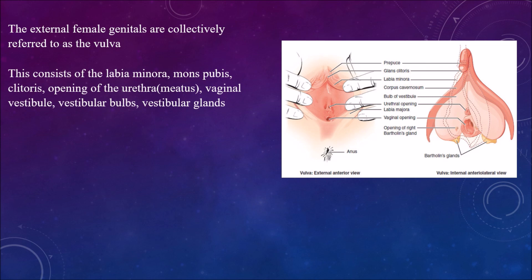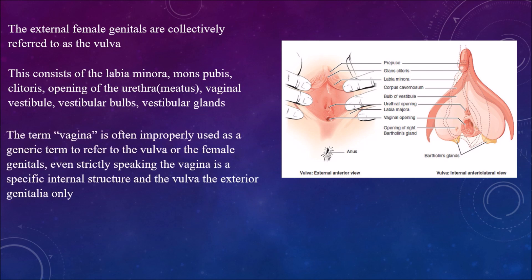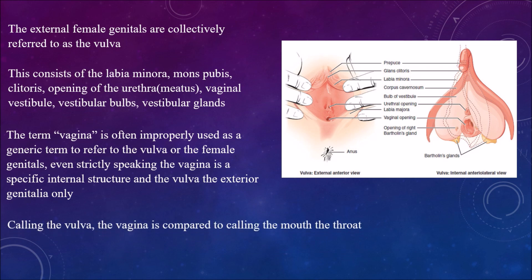The vulva consists of the labia minora, mons pubis, clitoris, opening of the urethra (also called the meatus), vaginal vestibule, vestibular bulbs, and vestibular glands. The term 'vagina' is often improperly used to refer to the vulva. Strictly speaking, the vagina is a specific internal structure — calling the vulva the vagina is like calling the mouth the throat. They are different.